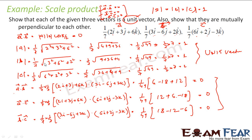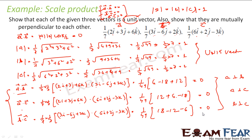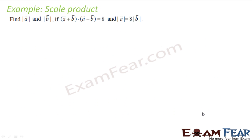Thus I can conclude that all vectors A, B and C are mutually perpendicular, because A dot B equals 0 means A is perpendicular to B; A dot C equals 0 means A is perpendicular to C; and B dot C equals 0 means B is perpendicular to C. So all are mutually perpendicular. Let us take one more example.